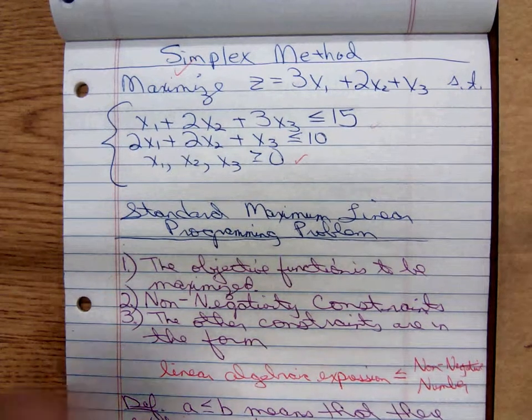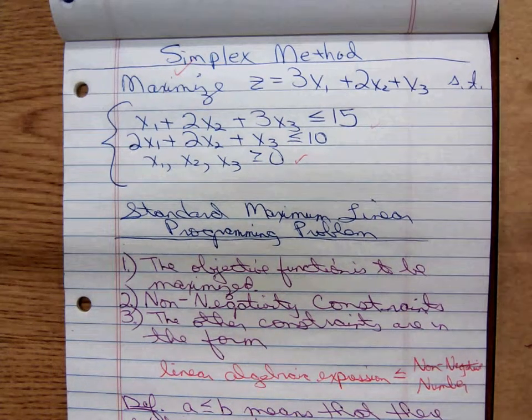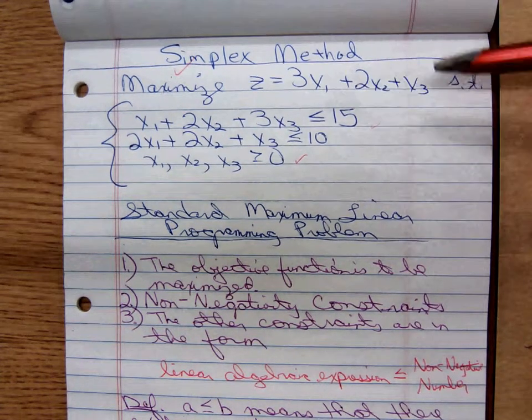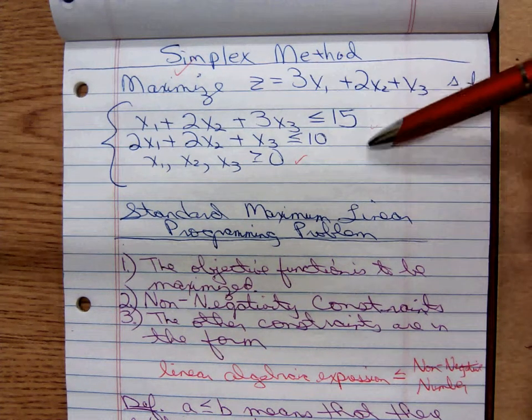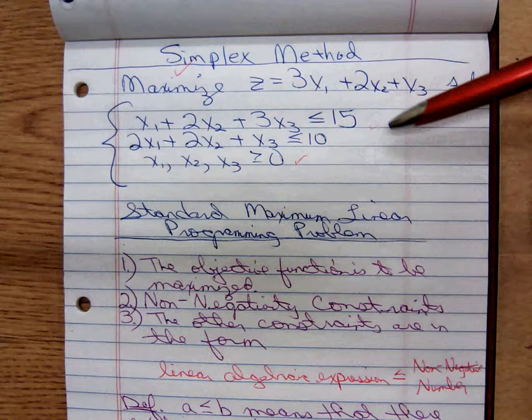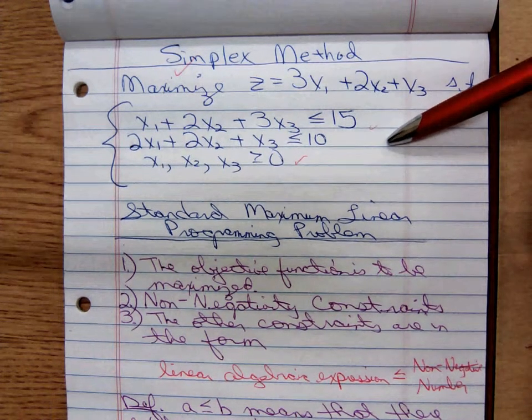And notice, here's a linear programming problem. It says maximize, and we have this objective function, subject to some constraints. I claim this problem is a linear programming problem.